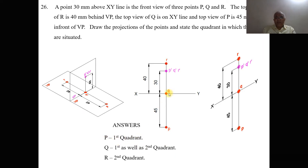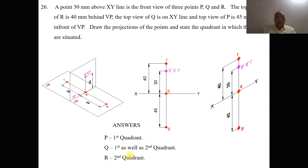Since Q is on the XY line, if Q goes above the XY line it becomes the second quadrant; if Q comes below it becomes the reverse quadrant. But it is on the XY line, therefore capital Q lies in both the first as well as second quadrant. For capital R, both the front view and the top view are above the XY line; therefore capital R is in the second quadrant.